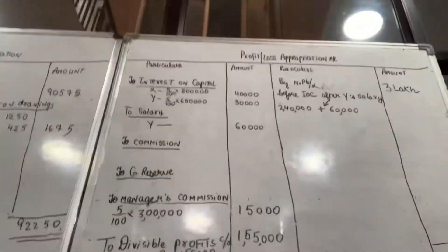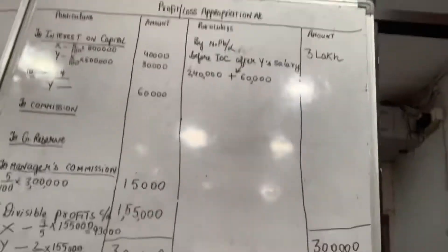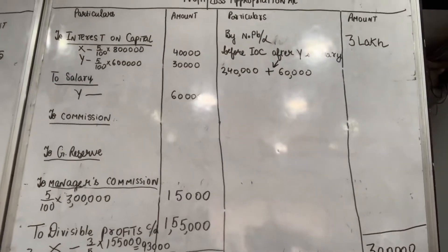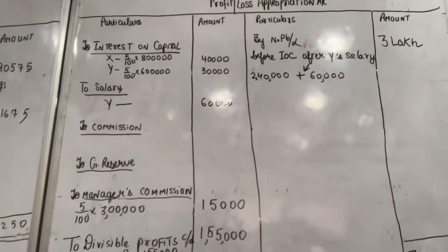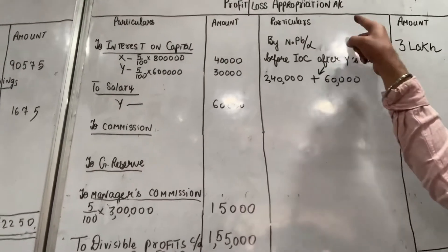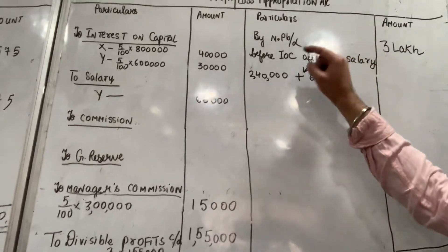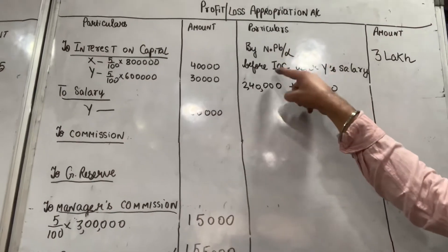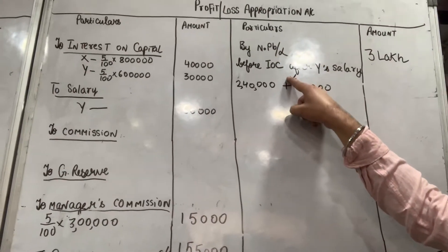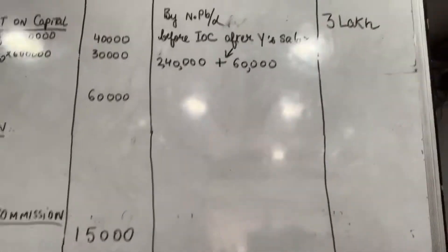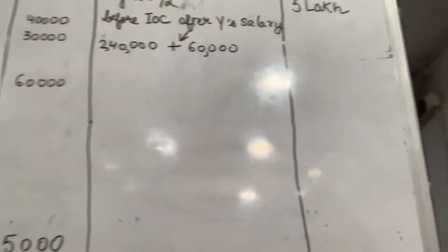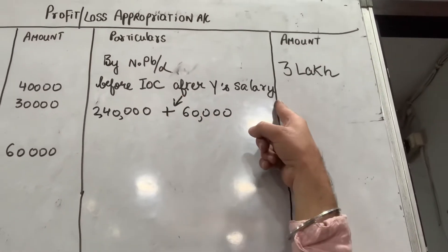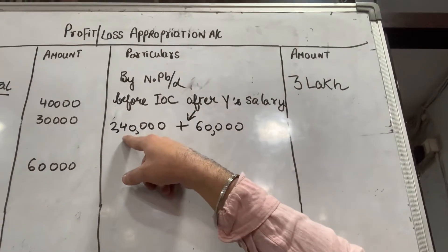Dear students, in this video I am going to cover a very important question from the introduction to partnership chapter. So, Profit & Loss Appropriation Account. You have been given net profit before IOC, after Y's salary. Net profit is 240 — IOC is not yet deducted but Y's salary has already been deducted.